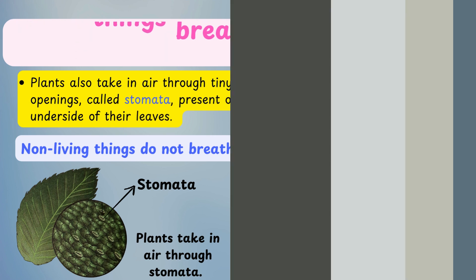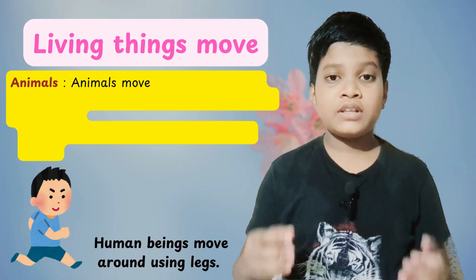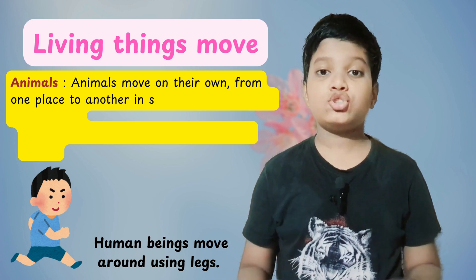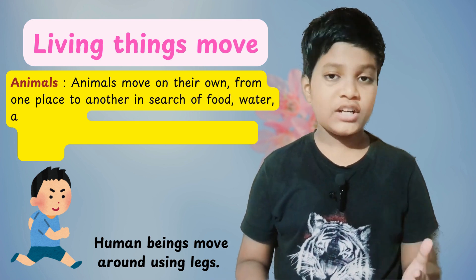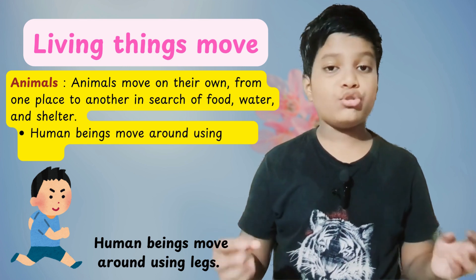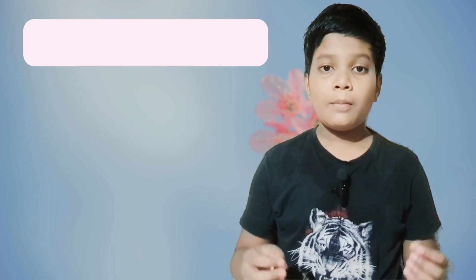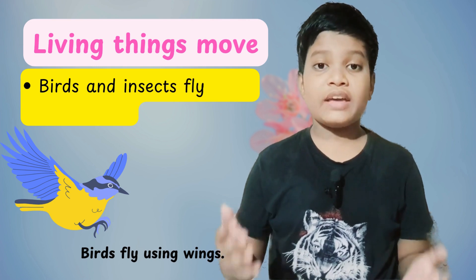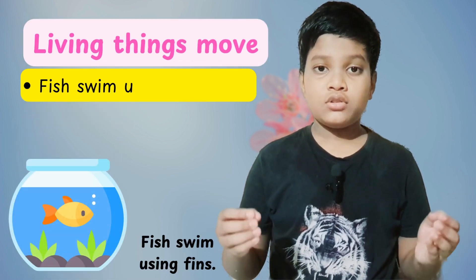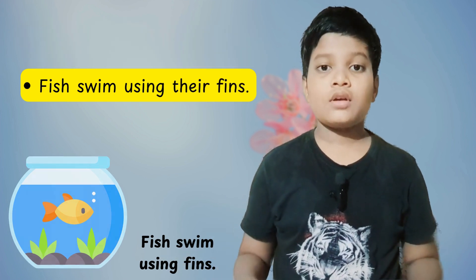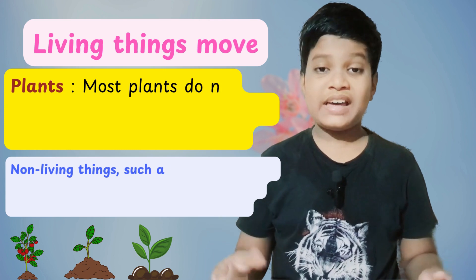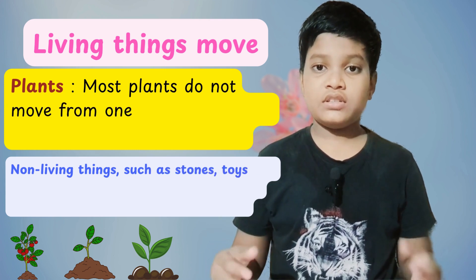Non-living things do not breathe. Living things move. Animals move from one place to another in search of food, water, and shelter. Human beings move around using their legs. Birds and insects fly using their wings. Fish swim using their fins. Plants cannot move from one place to another as they are fixed in the soil.